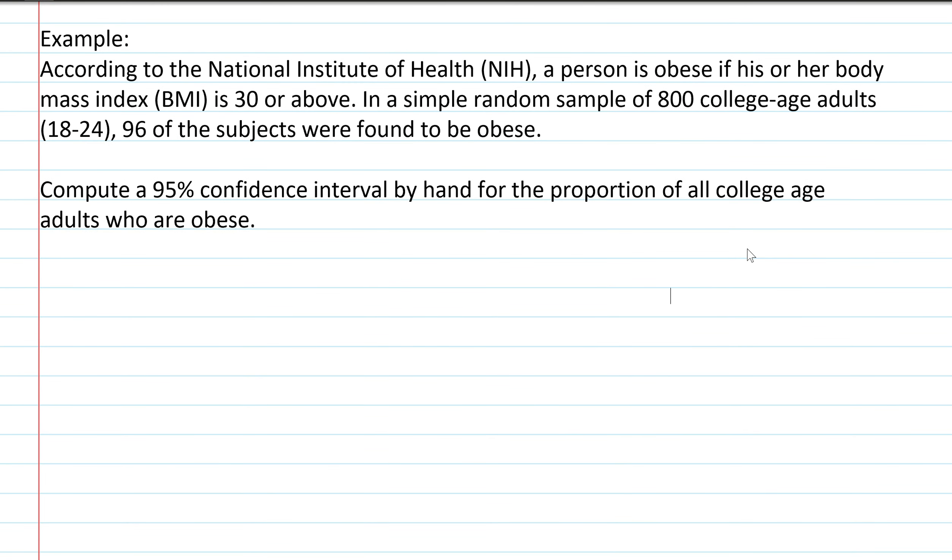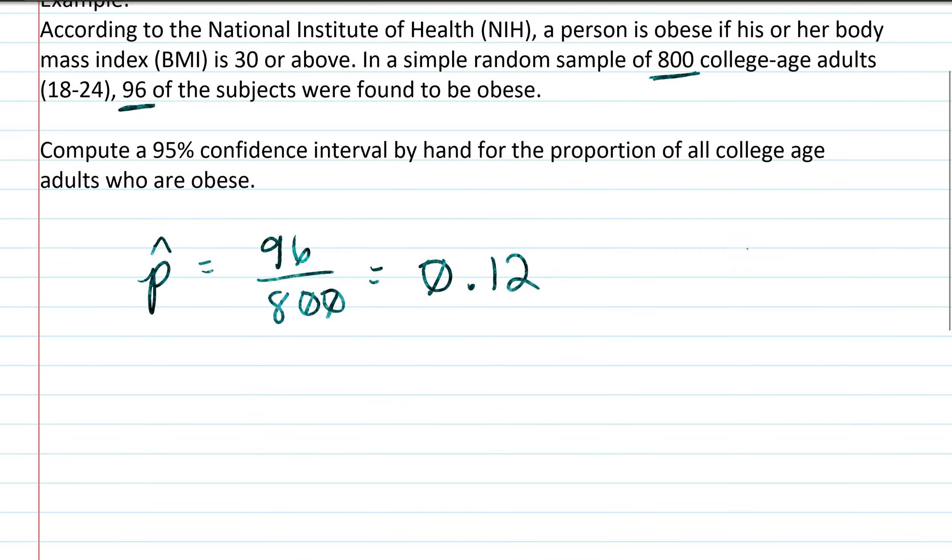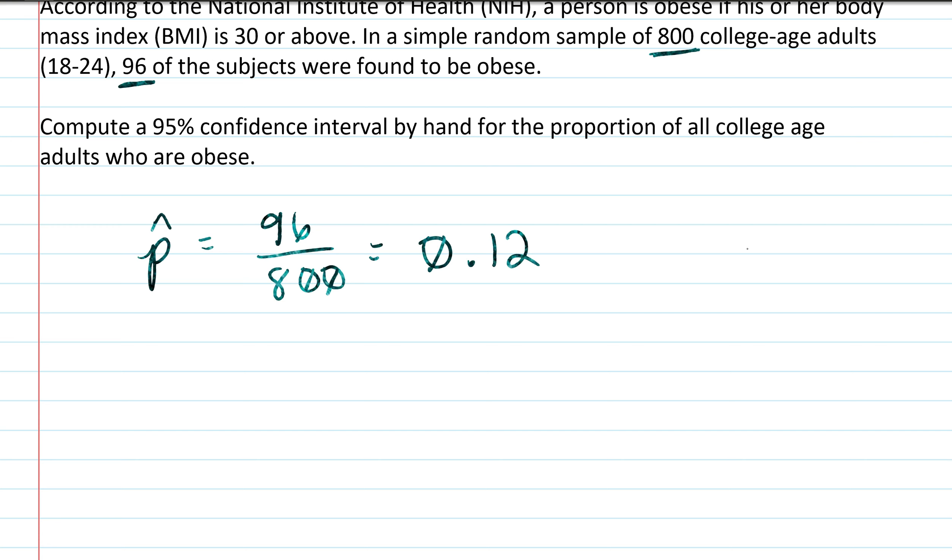All right so the first thing we should do here is figure out what our p-hat is. P-hat should be this 96 subjects that they give you that were found to be obese and it should be divided by the 800. So 96 over 800 and my calculator gets me 0.12. If we have p-hat for proportions then we should definitely find what q-hat is. So q-hat is just 1 minus your p-hat. So in this case it'll be 1 minus 0.12 which is 0.88.